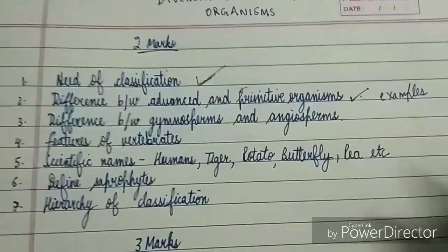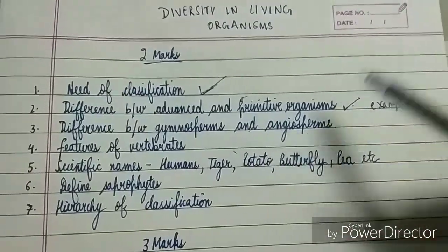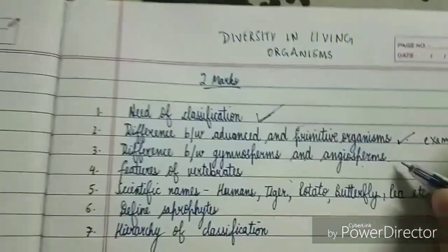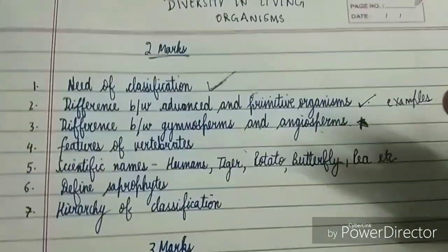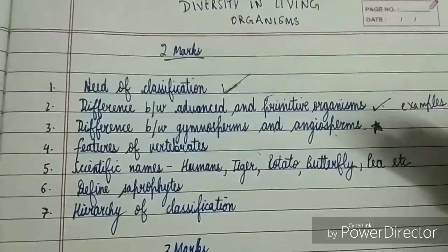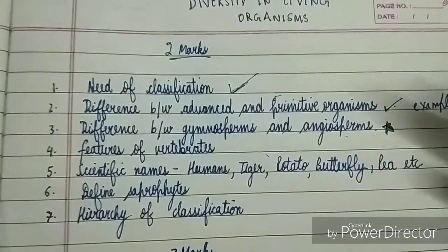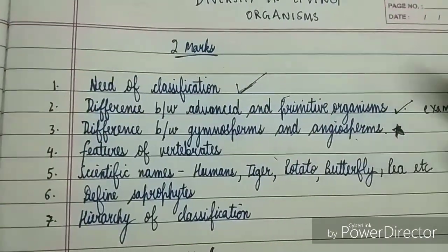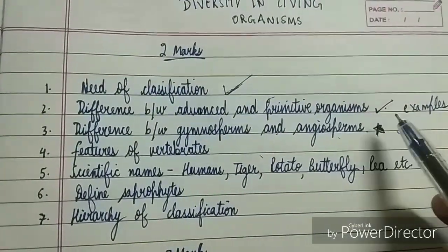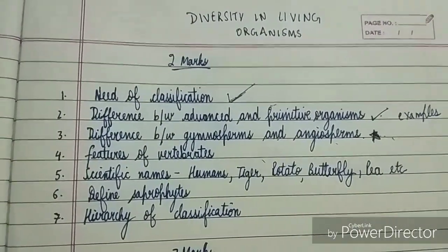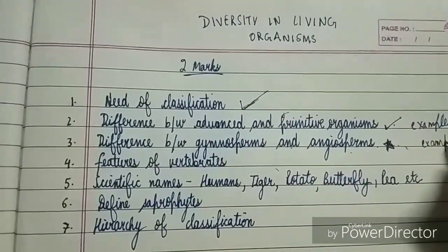The next important difference is between gymnosperms and angiosperms — mark this as very very important. This can come in two marks or three marks, and can also be asked as characteristics of gymnosperms and angiosperms separately. Please remember the examples of each and everything in this chapter.